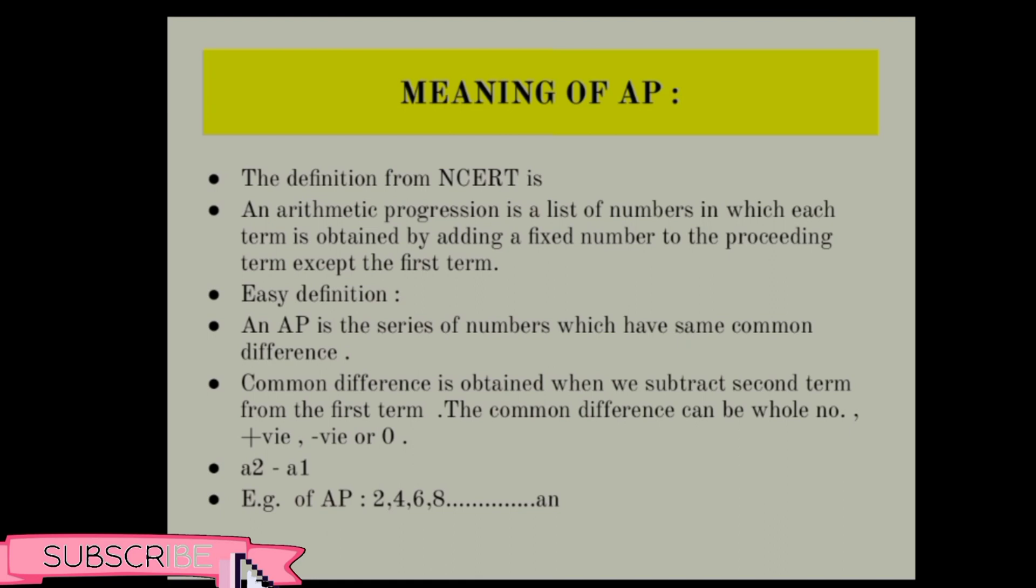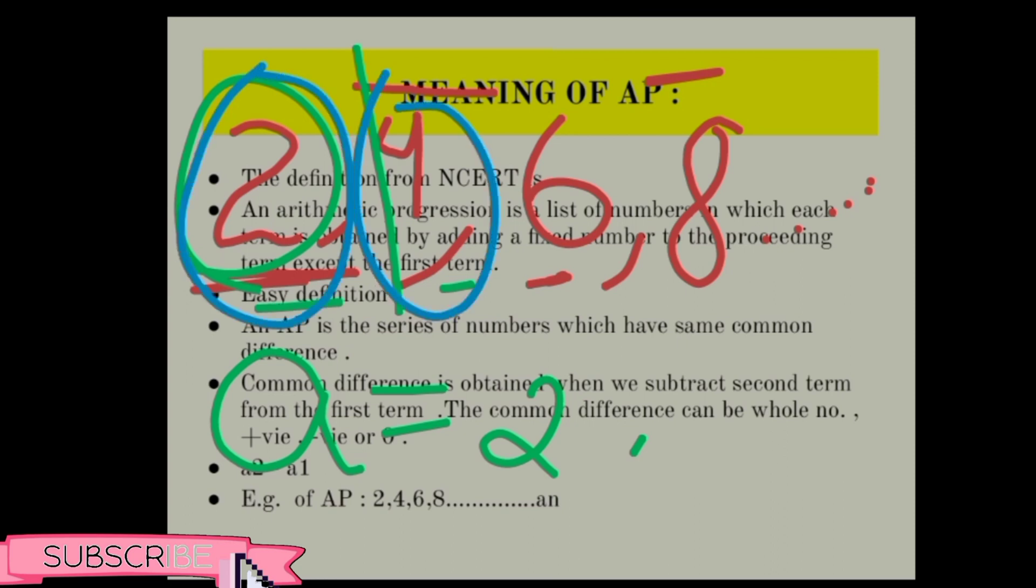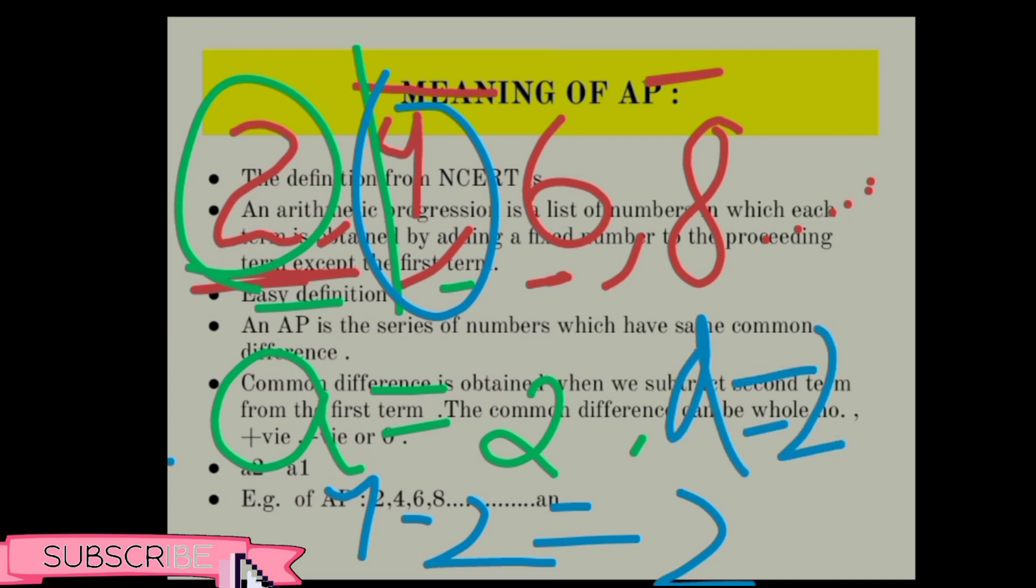Now an example of an AP. We have 2, 4, 6, 8. This is the first term, second term, third, and fourth. So 'a', the first term, is 2. Now what is the difference between these terms? When we subtract, the common difference means a2 minus a1. If I calculate 4 minus 2, it will be 2. So d is 2.